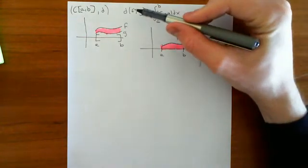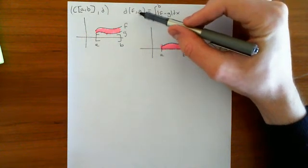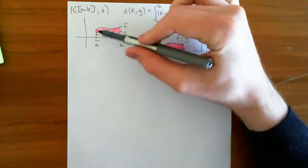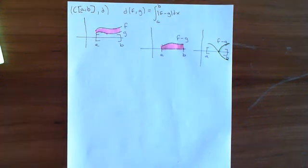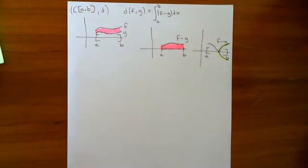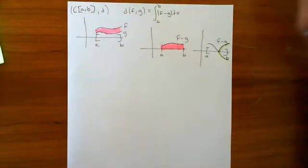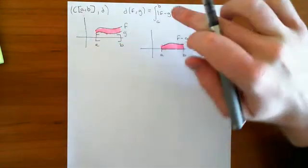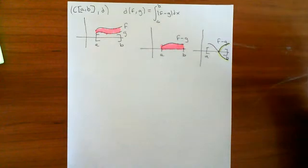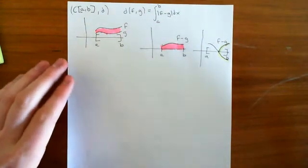Intuitively, this metric ascribes the distance between a function f and a function g as the area between them. So we want to see why this isn't a complete metric space. To prove that a metric space isn't complete, all I need to do is find a Cauchy sequence of elements of that metric space which does not converge to an element within the metric space.